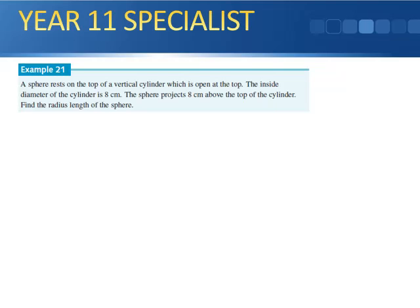Example 21. It says a sphere rests on the top of a vertical cylinder, which is open at the top. The inside diameter of the cylinder is 8 centimetres, the sphere projects 8 centimetres above the top of the cylinder, find the radius of the sphere. So, we have a vertical cylinder, so I'm just going to quickly draw that. There it is there, and it says that it's 8 centimetres, so that in there is 8 centimetres. I'll call this A to B. Then we've got, which I'll do in red, a sphere pressing the top of the cylinder, but the sphere projects 8 centimetres above the top. So from the top to the top of the sphere is going to be 8 centimetres.